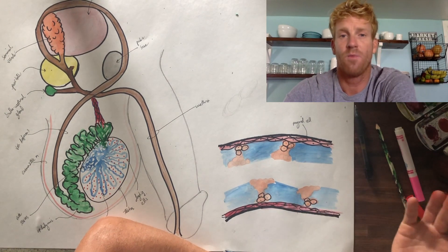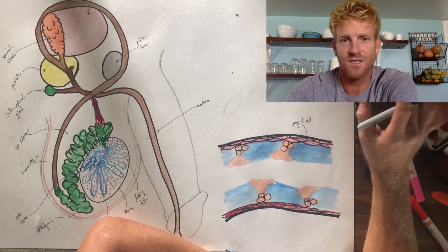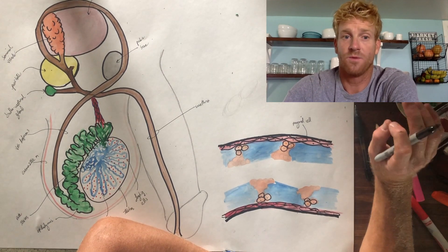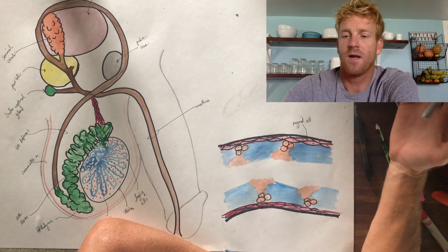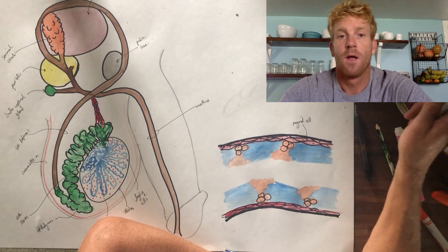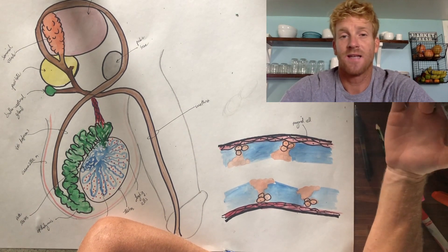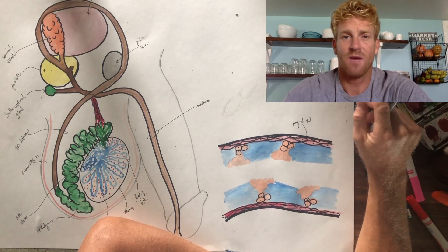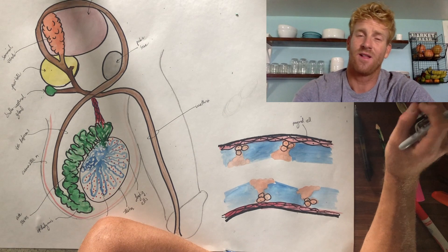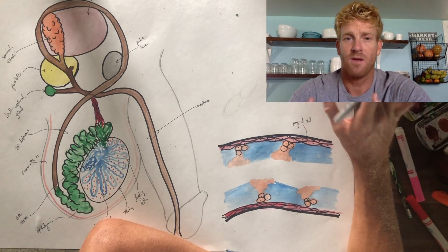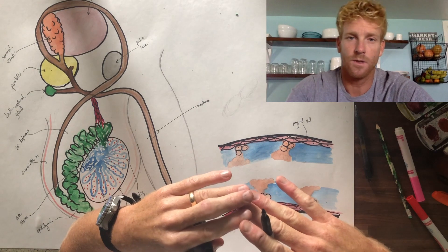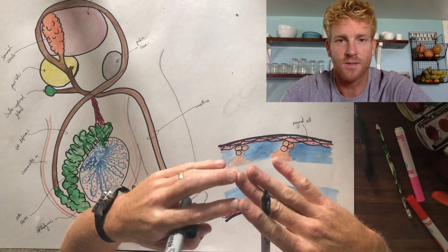Meiosis is all about the production of gametes — eggs and sperm. Meiosis produces sperm and eggs which have half the number of chromosomes relative to every other cell in our body. Most cells in our body have 46 chromosomes, 23 pairs — one chromosome from mom, one from dad. Meiosis produces sperm or eggs that contain only 23 chromosomes, one member of each pair. This way, when sperm with 23 chromosomes fertilizes an egg with 23, they add up to 46. If sperm contained 46, the embryo would contain 92, which would be a huge problem. So meiosis solves a numbers game — it solves a math problem.